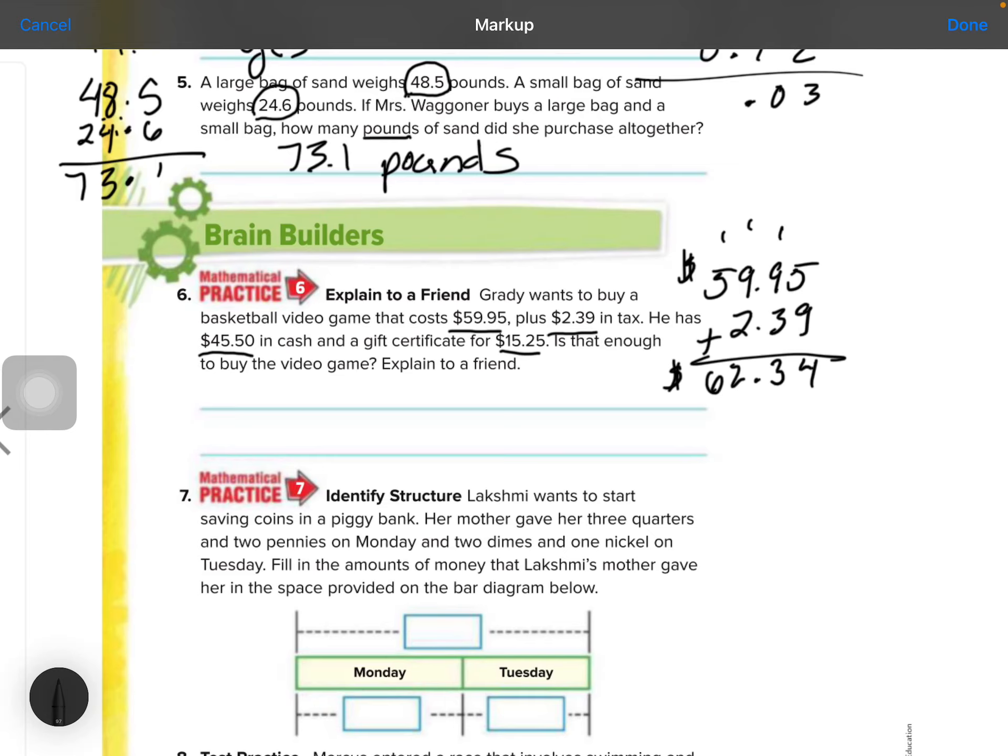Now let's find out how much money he's got in his cash and his gift certificate. So $45.50, then he has $15.25. Plus. Bring down the 0 from 5, and you have 5 left, 5 will come down. 5 plus 2 is 7. Bring down the decimal. 5 plus 5 is 10. 4, 5, 6, $65.75.